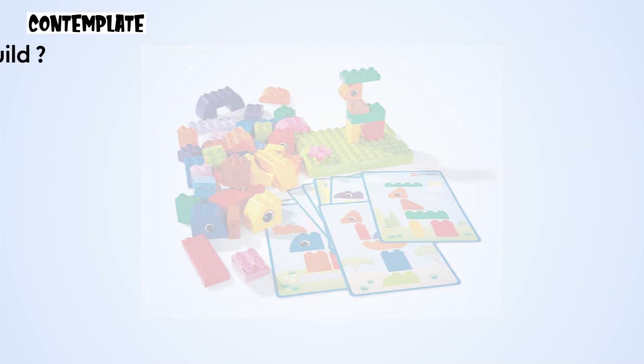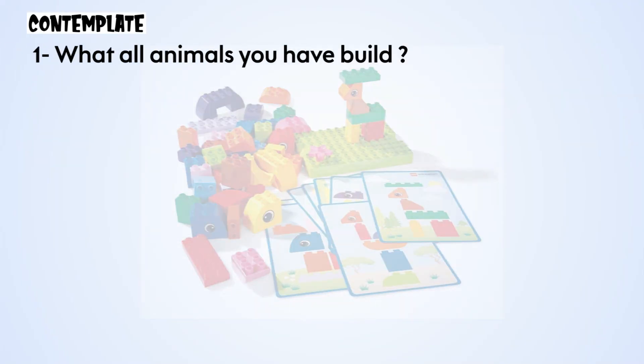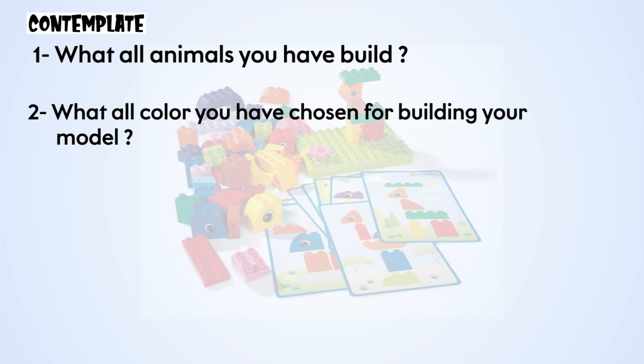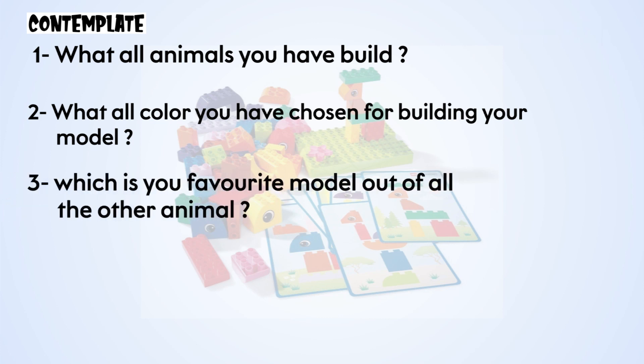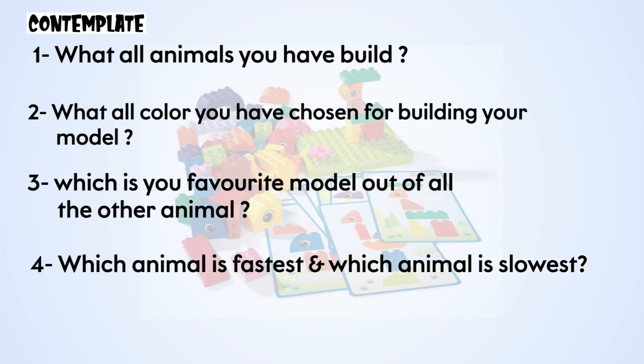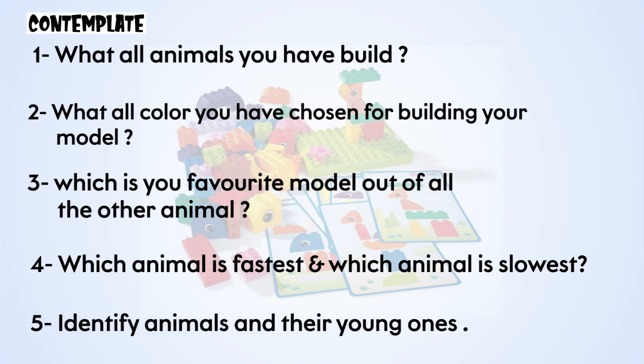After the construction of the model, it's time to ask some questions related to the models from the children. This phase is called the contemplation part. For example: What all animals did you build? What colors did you choose for your model? Which is your favorite model? Which animal is fastest and which is slowest? Identify animals and their young ones.